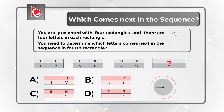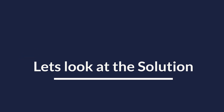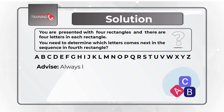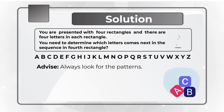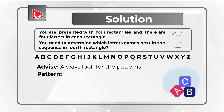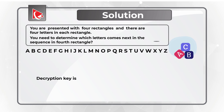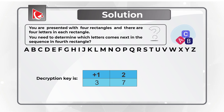To answer this question correctly, you need to know the letters of the English alphabet as well as a little bit of math. Always look for patterns. Letters of the English alphabet are incremented here by a certain number, and the increment is different for each section of the rectangle. The decryption key — if you're familiar with encryption and decryption — is 1, 2, 3, and 7.